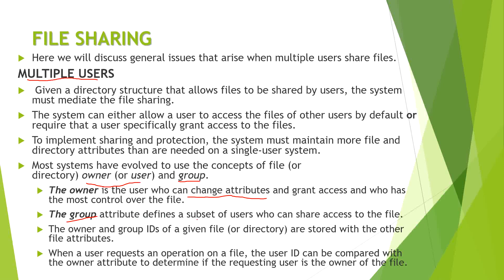The group attribute defines a subset of users who can share access to the file. The owner and group IDs of a given file are stored with the other file attributes. When sharing a file, the file is given one ID, and users and groups also have their own IDs. These IDs are checked to verify whether the owner or group has certain permissions — if the match is successful, the file can be accessed; otherwise not.